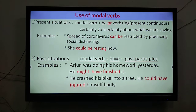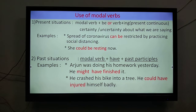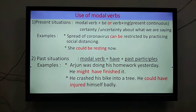We use modal verbs plus be or verb plus -ing in present continuous in situations which are certain or about which we are uncertain. For example, the spread of coronavirus can be restricted by practicing social distancing. We are talking about now or a bit in the future. It is advice. 'She could be resting' means in the present continuous, she could be resting now. So, we use modal verb plus be or verb plus -ing in present continuous.